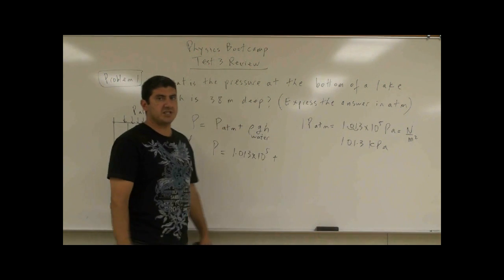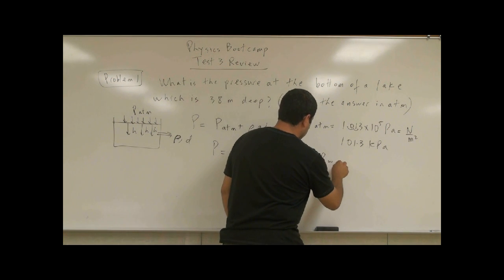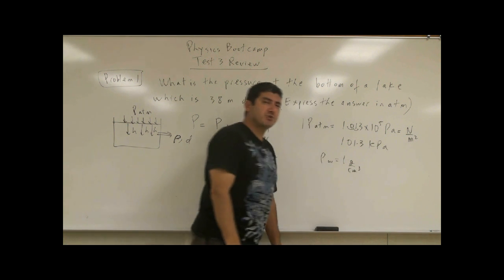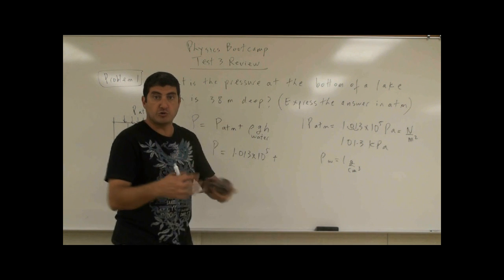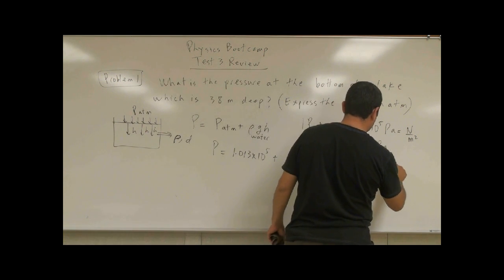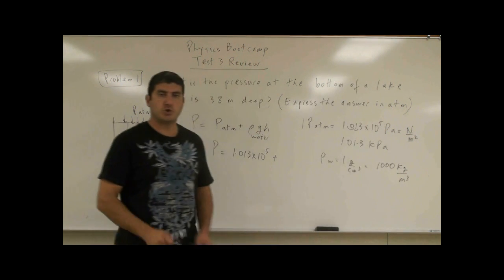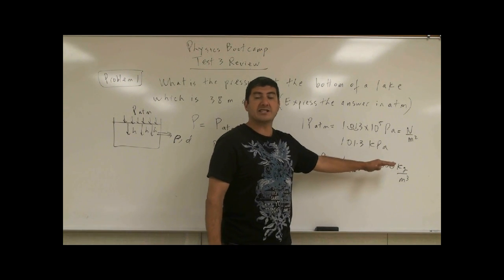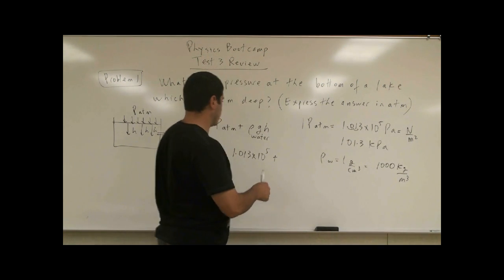What should we use for the density of water? Well, we know the density of water is one gram per cubic centimeter. But in this problem, we can't use that because we need it to be in metric unit in kilogram per meter cubed. So one gram per cubic centimeter is equal to 1,000 kilogram per cubic meter. From converting from here to there, we get that. So that's the density of water in the metric unit system. 1,000 kilogram per cubic meter.